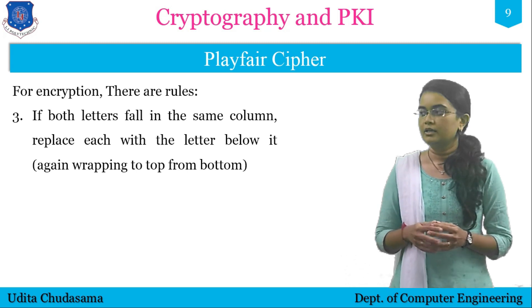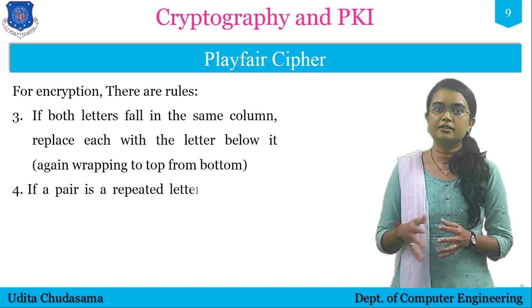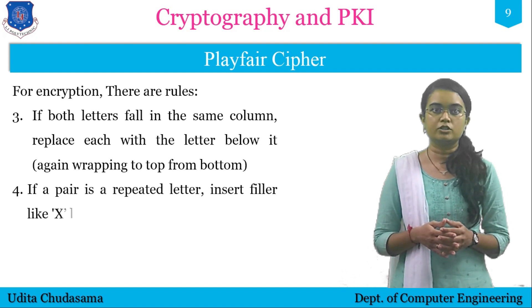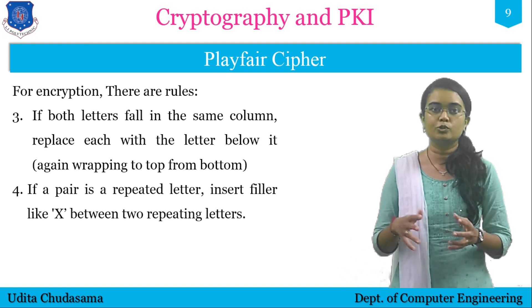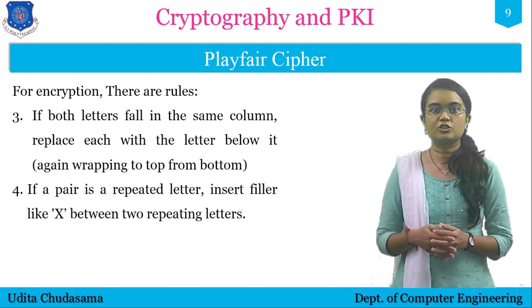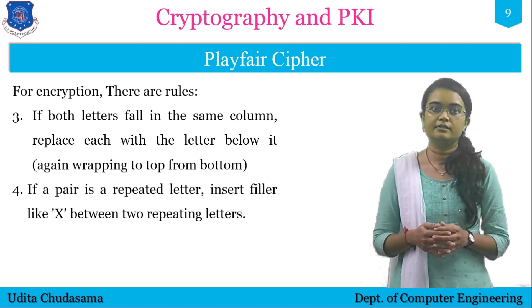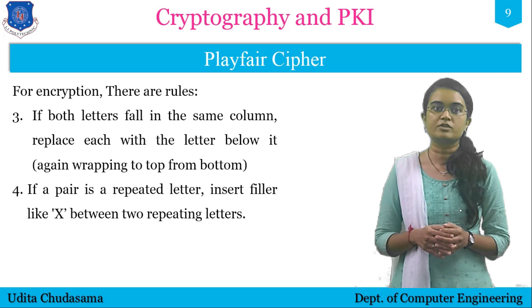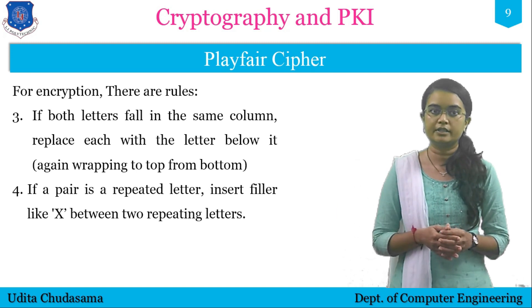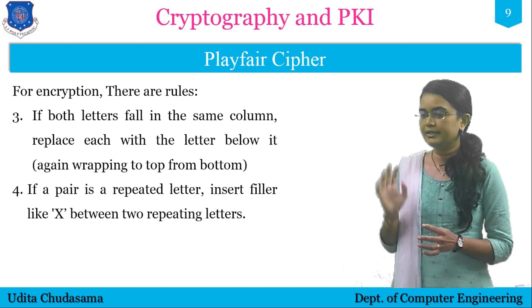Rule four, the last rule: if the two letters form a rectangle — meaning they are at two opposite corners — then replace each plain text letter with the letter that forms the other corner of the rectangle on the same row as that plain text letter.